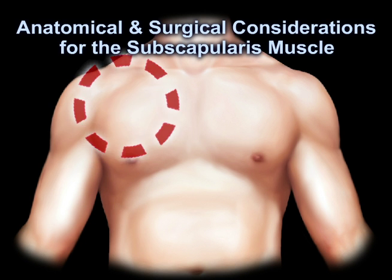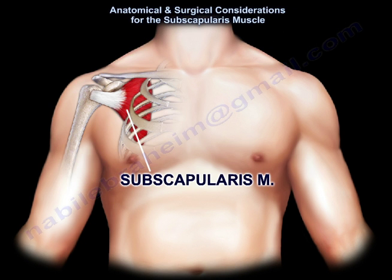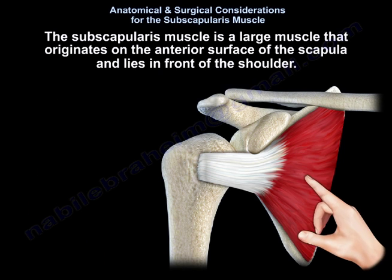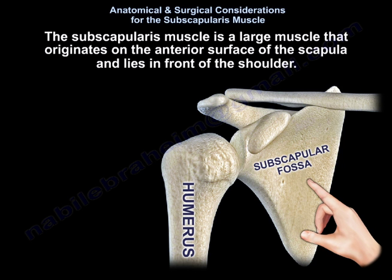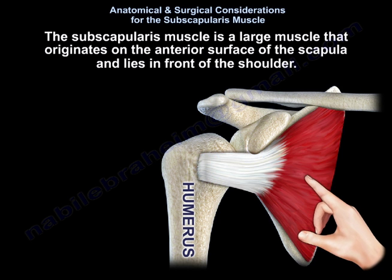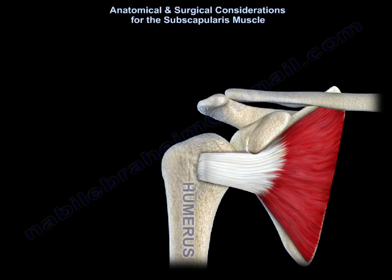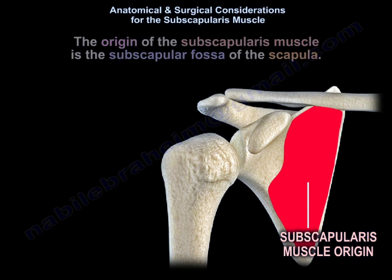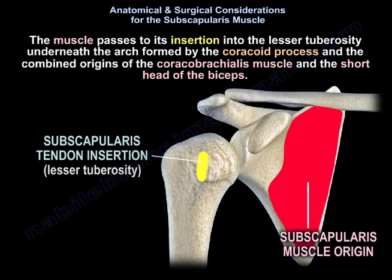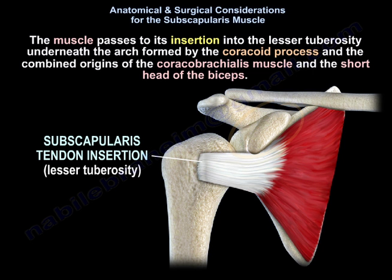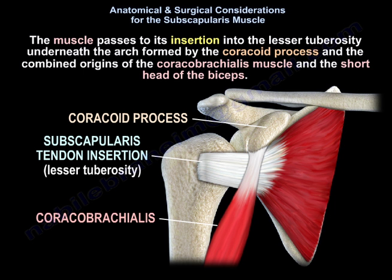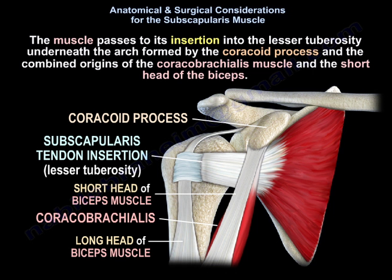Anatomical and Surgical Considerations for the Subscapularis Muscle. The subscapularis muscle is a large muscle that originates on the interior surface of the scapula and lies in front of the shoulder. Its origin is the subscapular fossa of the scapula, and the muscle passes to its insertion into the lesser tuberosity underneath the arch formed by the coracoid process and the combined origins of the coracobrachialis muscle and the short head of the biceps.